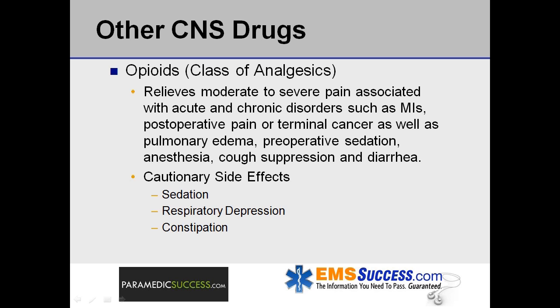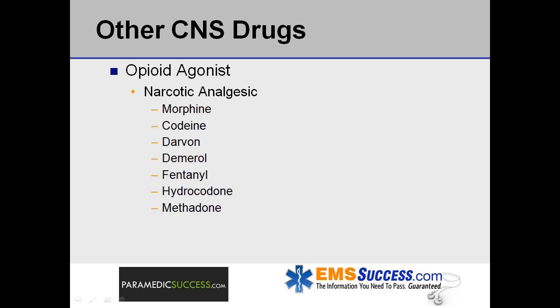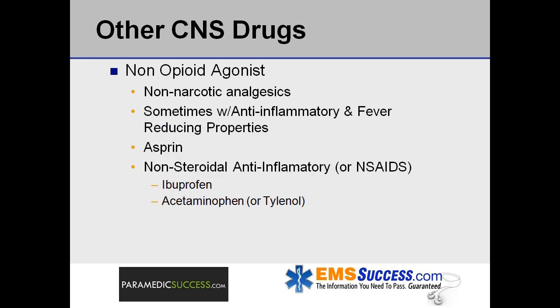Cautionary side effects include sedation, respiratory depression, and constipation. Opioid agonists are narcotic analgesics which include morphine or morphine-like drugs such as codeine, Darvon, Demerol, fentanyl, hydrocodone, and methadone.